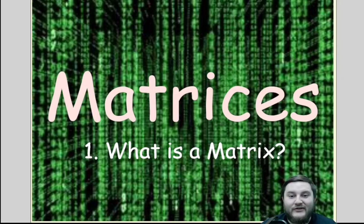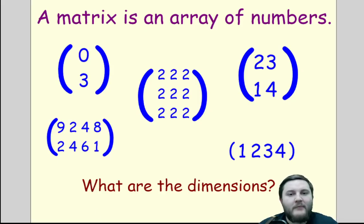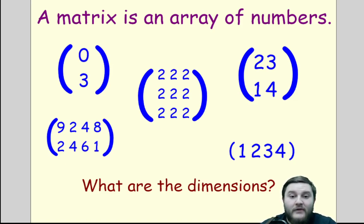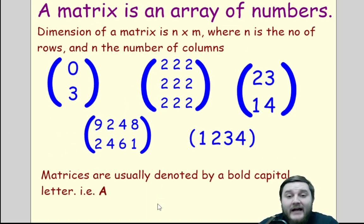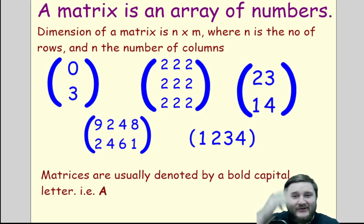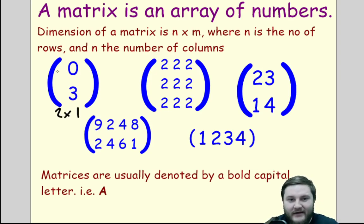So first of all, what is a matrix? Well, a matrix is just an array of numbers — basically just an arrangement of numbers. Computers usually use matrices to compact a large amount of information. One thing we need to know is the dimensions of a matrix. The dimensions are written as n by m, where n is the number of rows and m is the number of columns. For example, in this first matrix here, rows go across and columns go down, so this would be a 2 by 1 matrix — two rows and just one column.